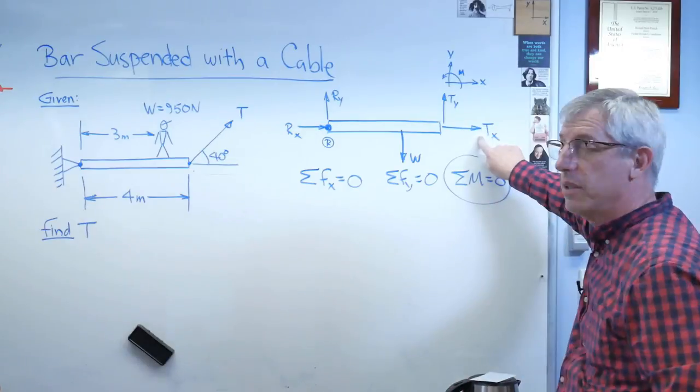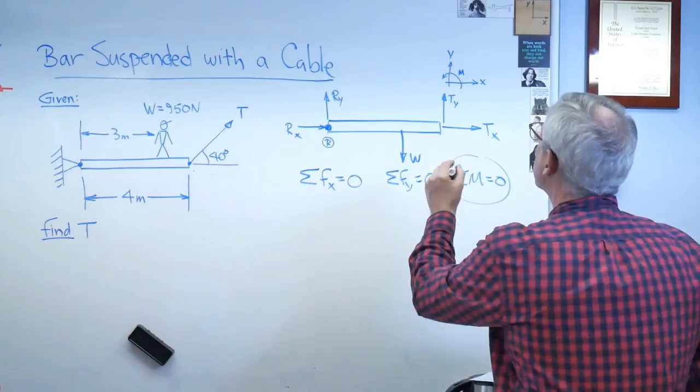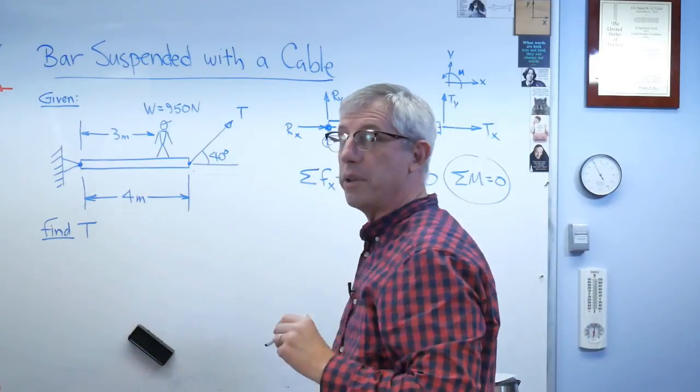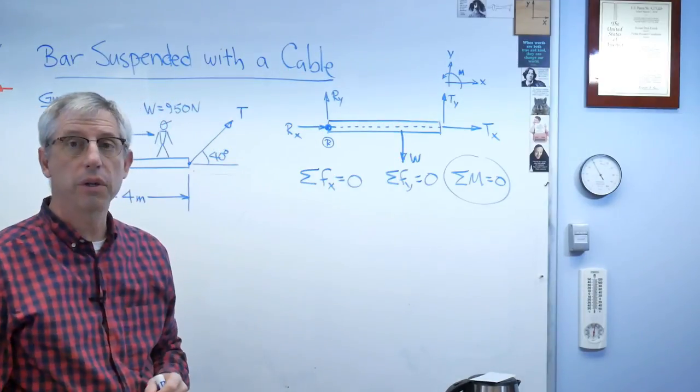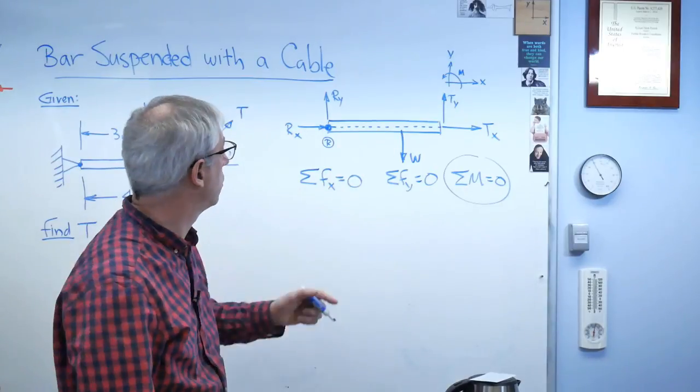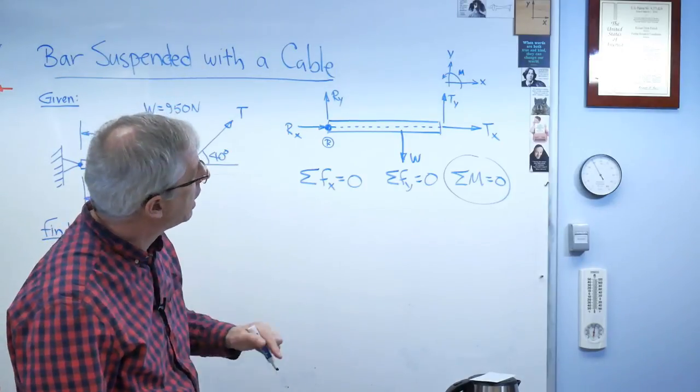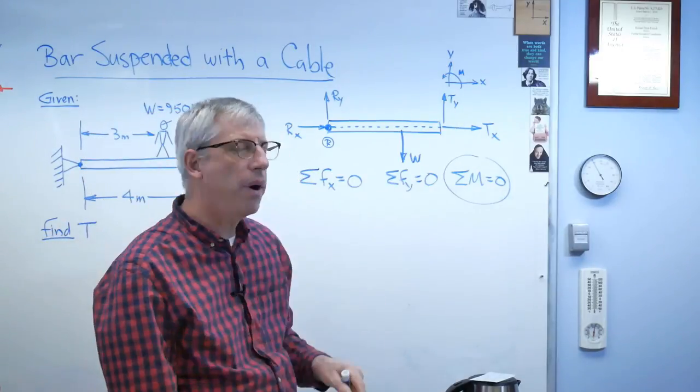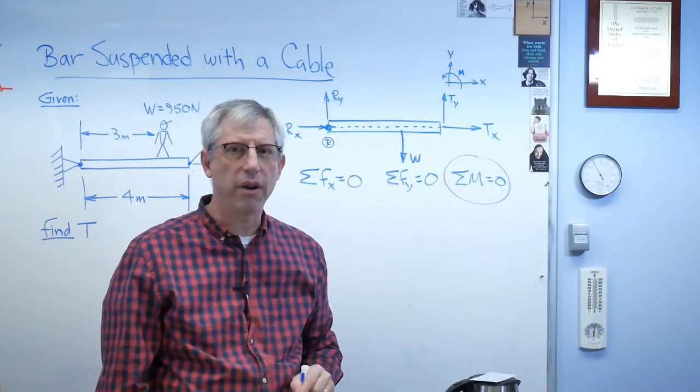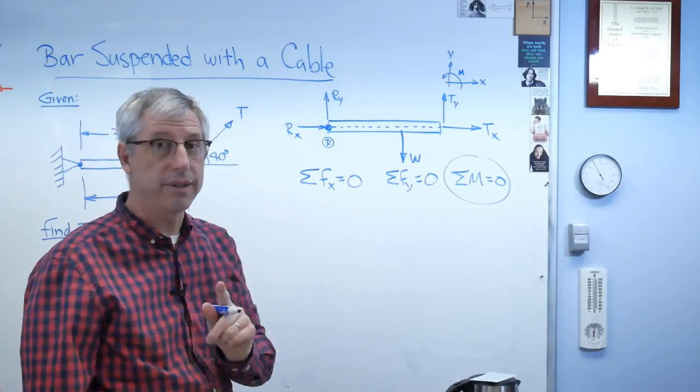The perpendicular distance from the horizontal component of tension to that point is also 0, because if you can extend this, you can extend forces as far as you want along their line of action to figure out what your perpendicular distance is, also goes through 0, or goes through this. The distance is 0. So the only thing I got left are W and TY. I'll bet if I know what TY is, I can figure out T. If I know one of the components, and I know the angle, I do, I can figure out T. It's not going to be hard.